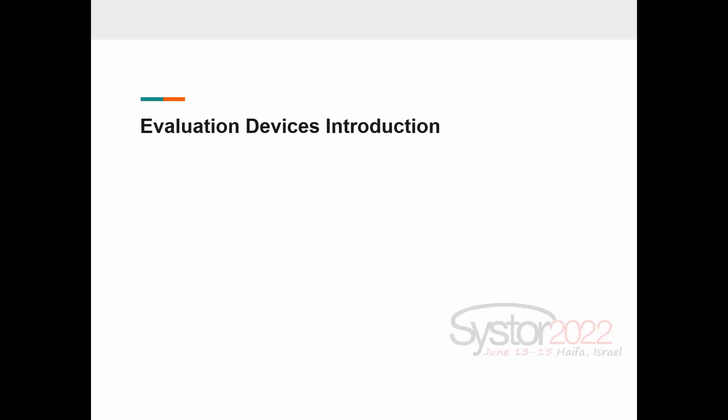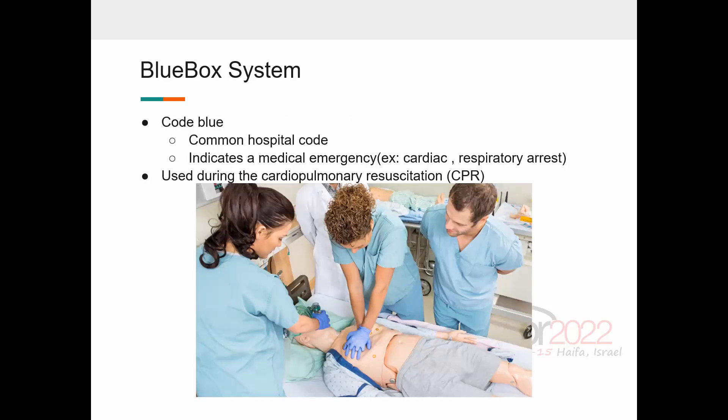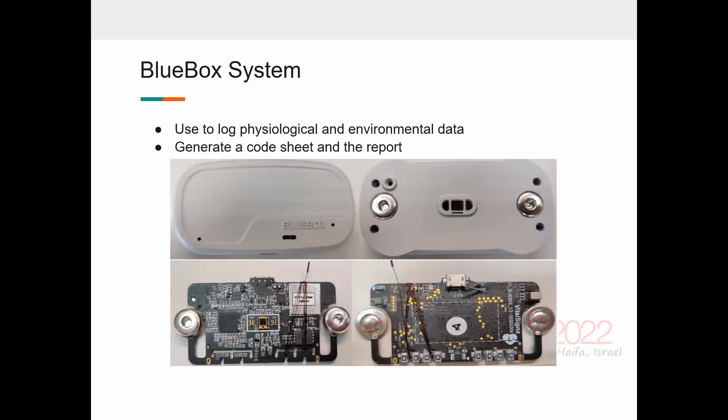Now, I'll be introducing our evaluation device. To motivate our investigation, we consider the blue box system, a data logger for code blue events. Code blue is a common hospital code that indicates a medical emergency, such as cardiac or respiratory arrest. The blue box system is used to log physiological and environmental data, and generate a code sheet and a report. We use the blue box system to present an evaluation of our LTS.